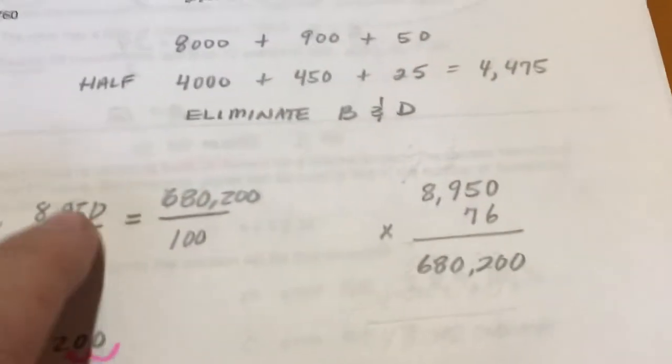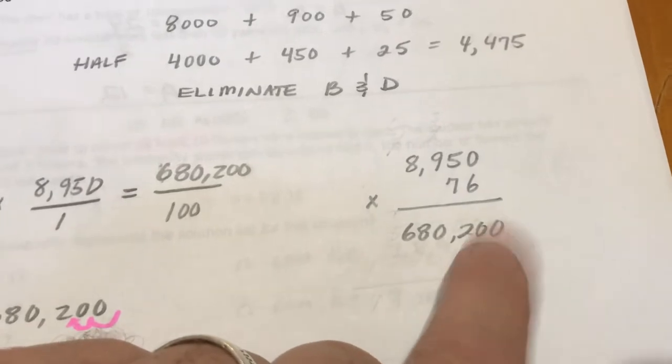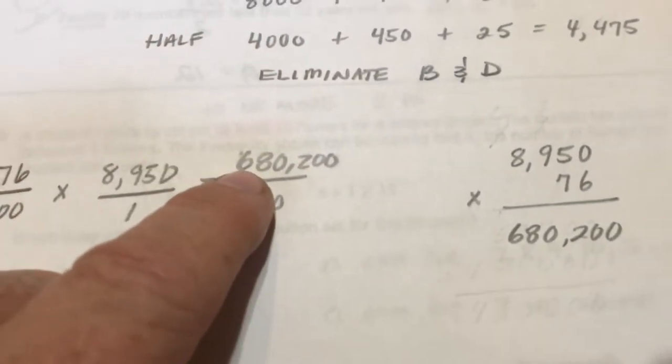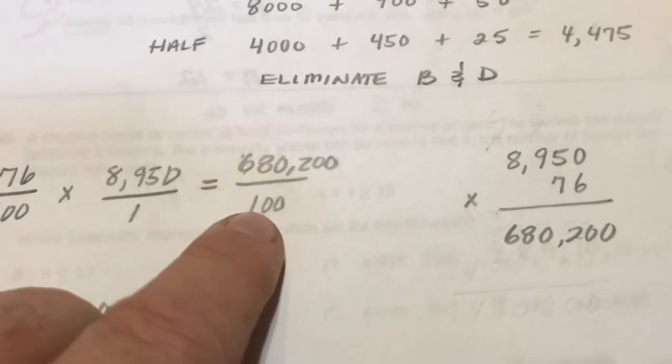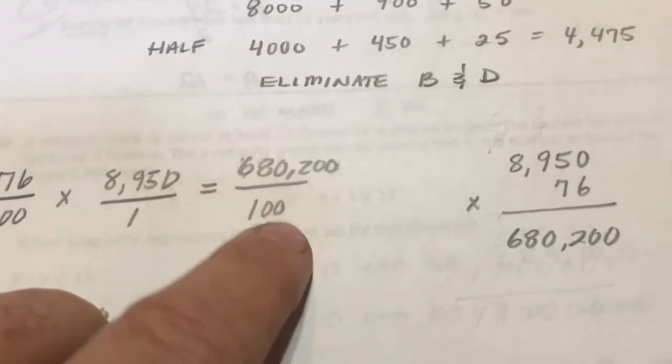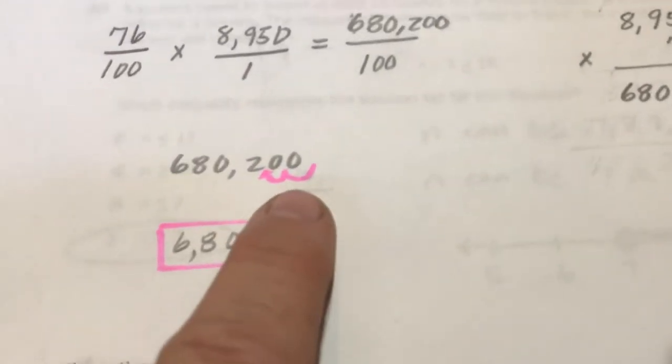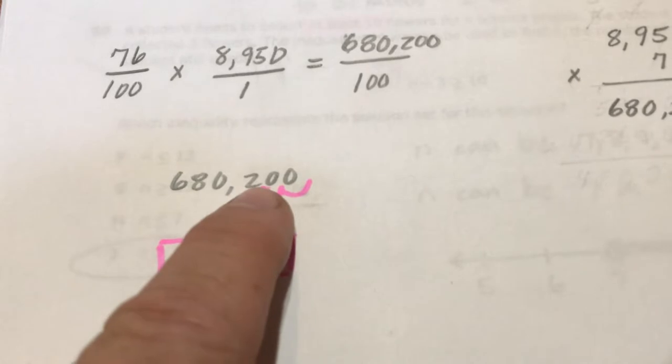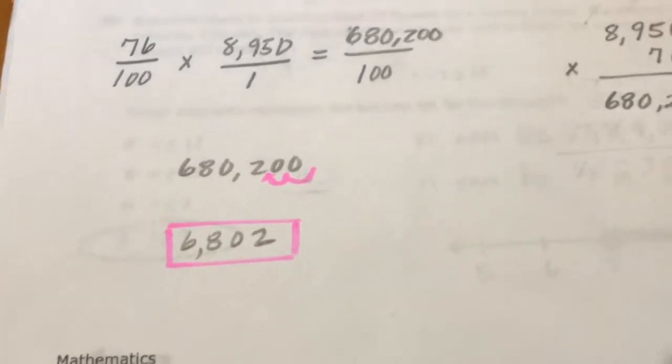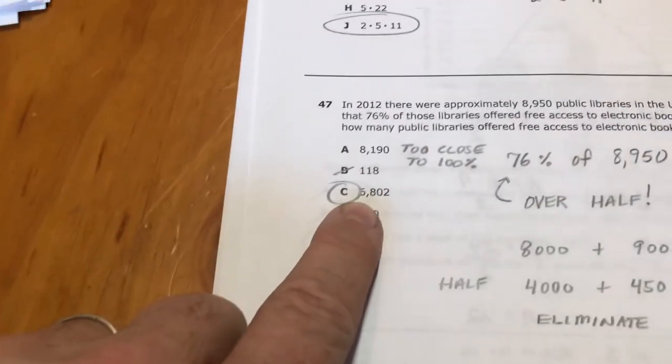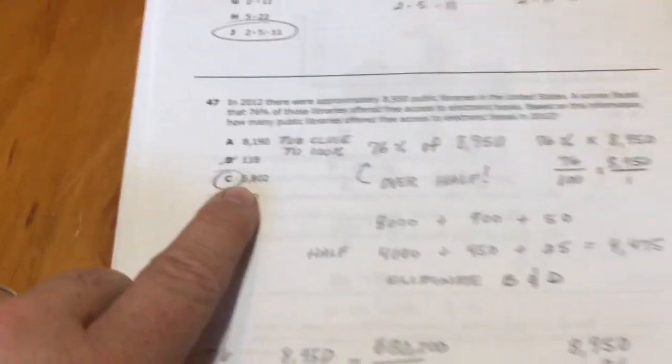So I came over here to the side and worked it out. I've got 680,200 over 100. That's dividing by 100. And just remember, if you want to divide a number by 100, move the decimal two places to the left. So now it's 6,802, which is what we thought it was going to be just using common sense.